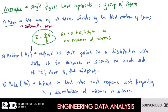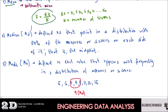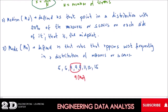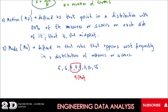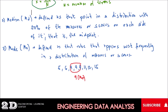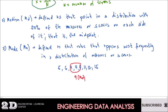Then we have the mode. The mode is the simplest among the measures of central tendency, defined as the value that appears most frequently — the data that has the highest number of repetitions. For example, given: 5, 6, 9, 9, 11, 12, 15 — because 9 is repeated, 9 is our mode.